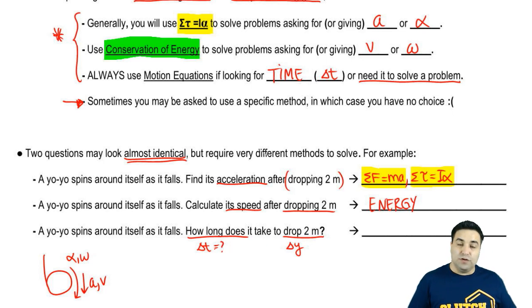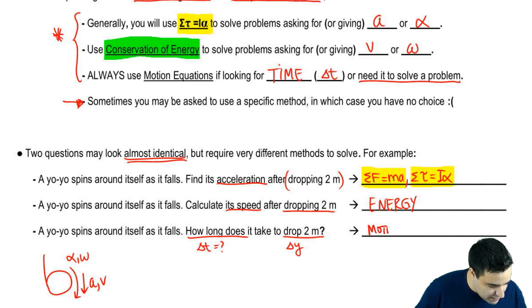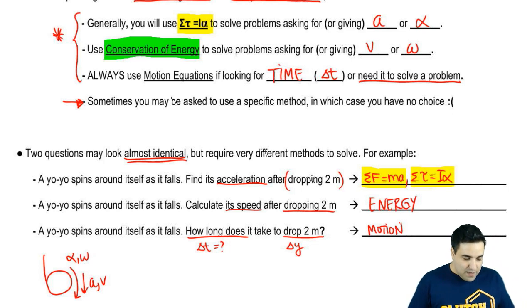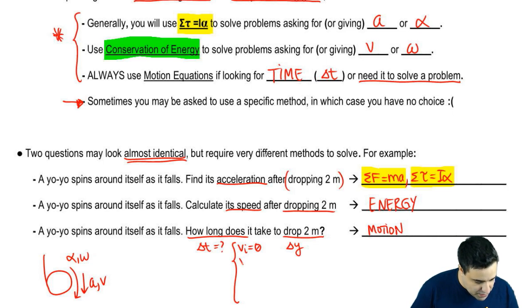Okay? And then here, we want to know how long does it take to drop two meters. Drop two meters is delta y, and how long does it take is delta t. Because I'm being asked for time, you have to use motion equations. Okay? But it's very likely that motion equations is not going to be enough because to do this, you're going to have to have acceleration. Let me list my five motion variables. Let me fit it here. Let's say you're dropping from rest. You don't know the final velocity. You don't know the acceleration. You're given delta y, and you're looking for delta t.